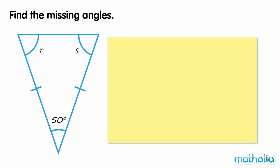Find the missing angles. This triangle has one known angle of 50 degrees and two missing angles, R and S.